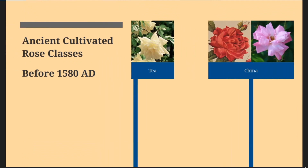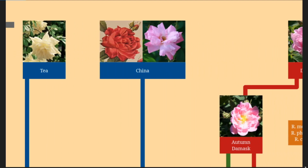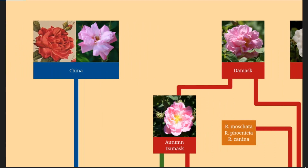Here I have the ancient cultivated rose classes — the ones recorded before 1580. These would have been the roses known to the historical Romans, Egyptians, the Middle East, as well as China. The further back we go in time, the less certain we are about these roses. On the China side, I've divided them into two different classes: the teas, being the taller, more climbing type roses with pointed buds that became important in later breeding of the hybrid teas, and the China roses, which is a catch-all group that includes all other roses cultivated in China. We only know a handful of them as they came into trade in Europe.